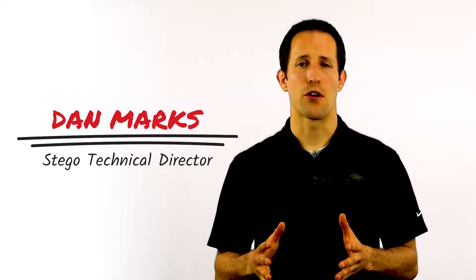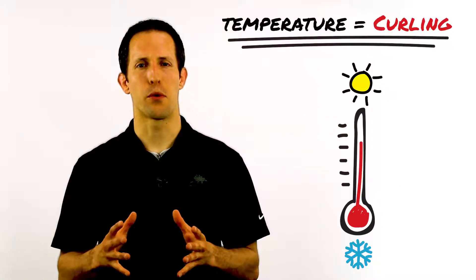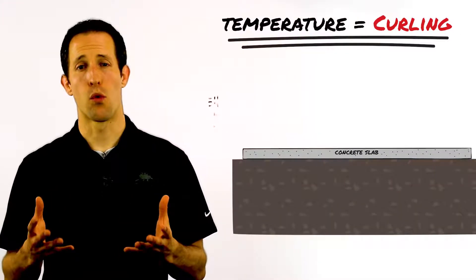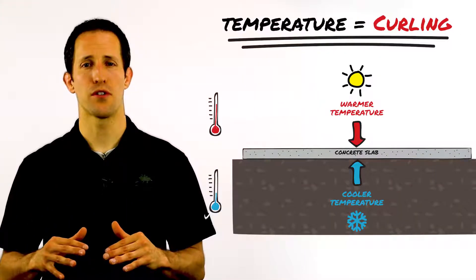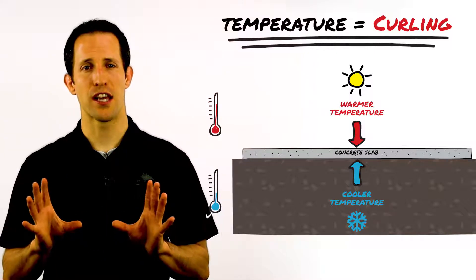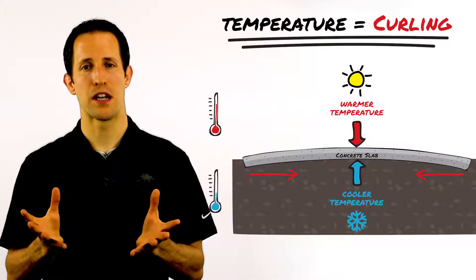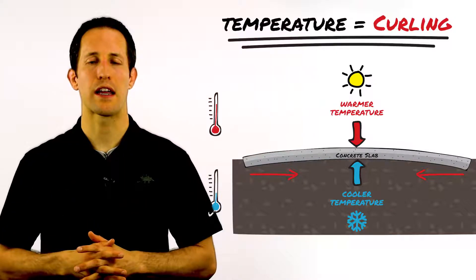The phenomenon of slab curling is caused by differentials in temperature between different portions of the slab. You may have a warmer surface and a colder subsurface or bottom of the slab, and that difference will cause different changes in the volume of the concrete. Different changes in volume will induce potential curling and stresses and cracking as a result.